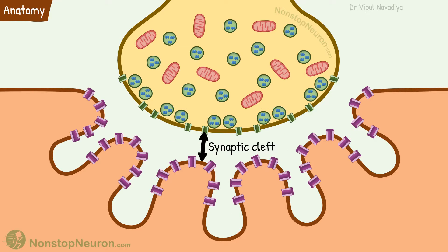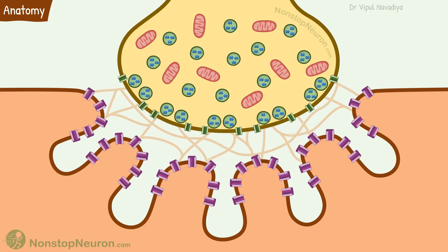The synaptic cleft is the space in between the nerve terminal and muscle fiber. It is filled with a meshwork of proteins and proteoglycans, and attached to them is the enzyme acetylcholinesterase that destroys acetylcholine. So, this is the structure of the neuromuscular junction.